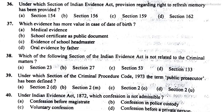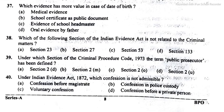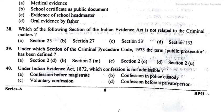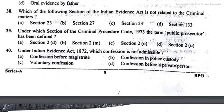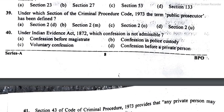The answer of question 36 is option C, that is section 159. The answer of question 37 is option B, that is school certificate as public document. The answer of question 38 is option A, that is section 23. The answer of question 39 is option D, that is section 2.